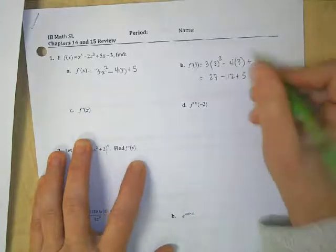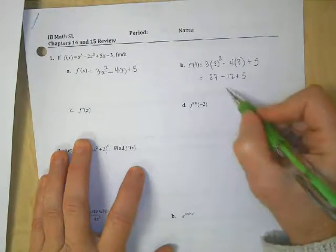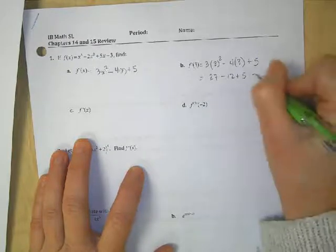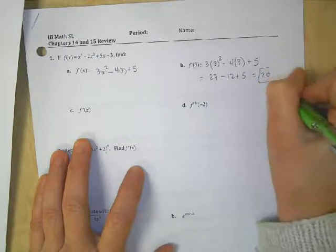And if I add those together, let's see, 27 minus 12 is 15. 15 plus 5 is 20. So the answer is 20.